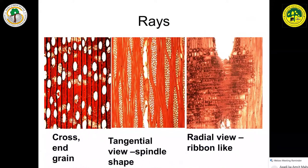When we look under the microscope, we have to count the vessels, take measurements, and study the pattern. For rays, we have to count the measurements in tangential section. Seriation we have to see. Pits we have to see. In radial section, we have to see whether it is homogeneous, heterogeneous, or any diagnostic characters are present in the sample.